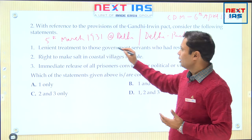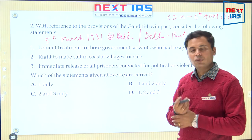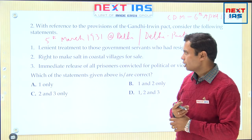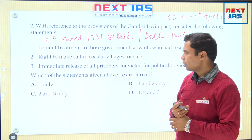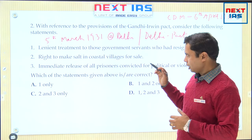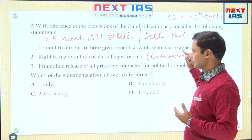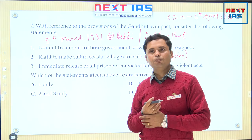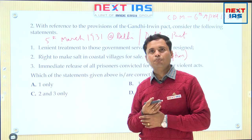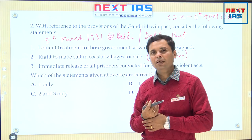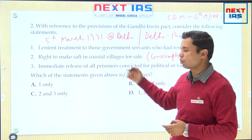Hence this pact was signed at Delhi on 5th March 1931 — the Gandhi-Irwin Pact or Delhi Pact — whereby it was agreed that there will be lenient treatment to all those people who had resigned in the course of the Civil Disobedience Movement. So the first statement is correct. The second statement — 'right to make salt in coastal villages for sale' — is wrong; the permission was given to coastal people to make salt for personal consumption, not for sale. The third statement — 'immediate release of all prisoners convicted for political or violent acts' — was also not agreed; only prisoners not guilty of violence were to be released. So only statement one is correct — answer will be A.